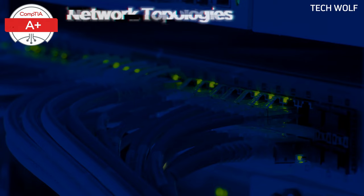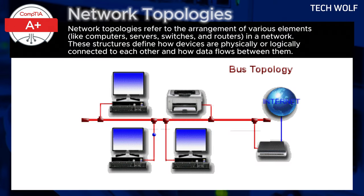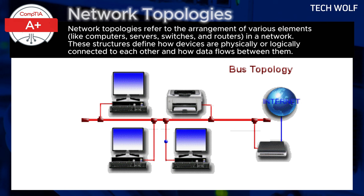Network topology refers to the arrangement of various elements like computers, servers, switches and routers in a network. These structures define how devices are physically or logically connected to each other and how data flows between them.